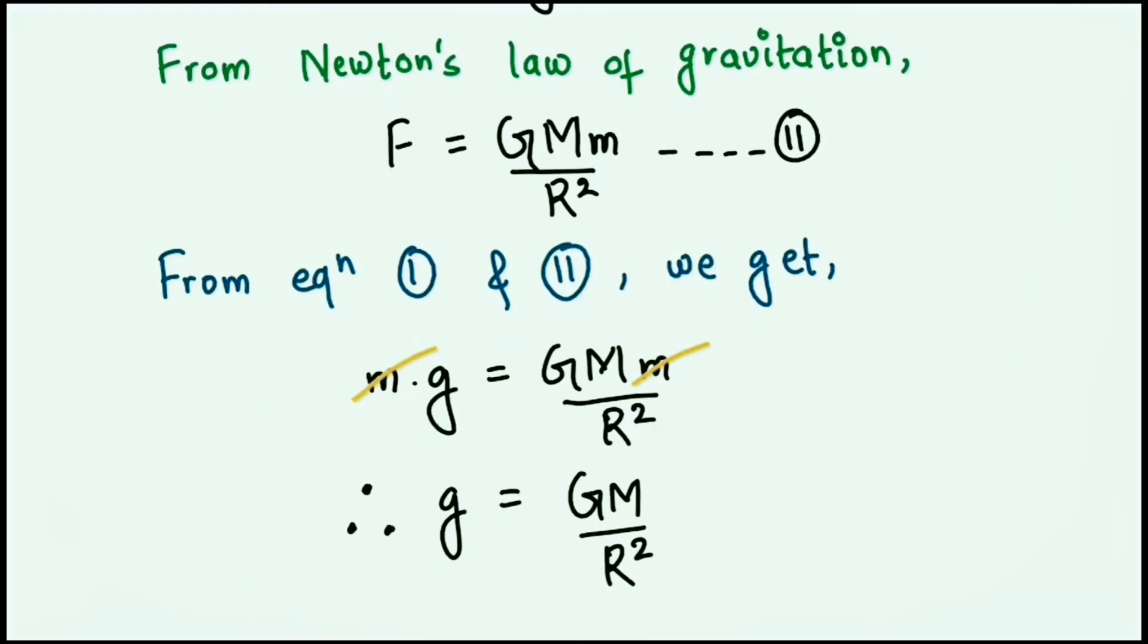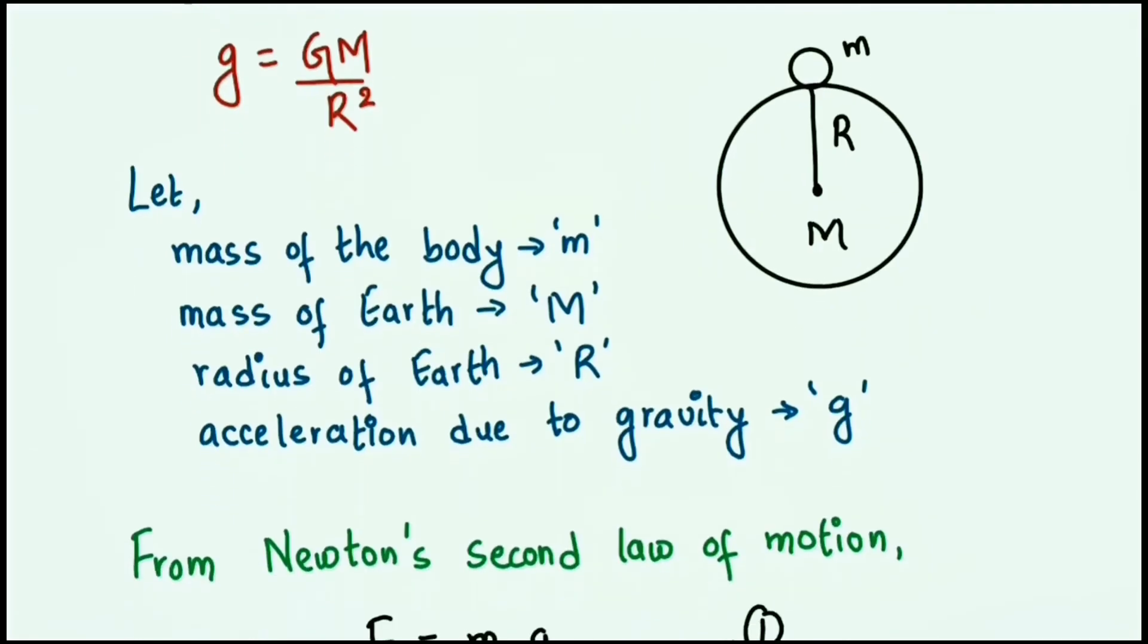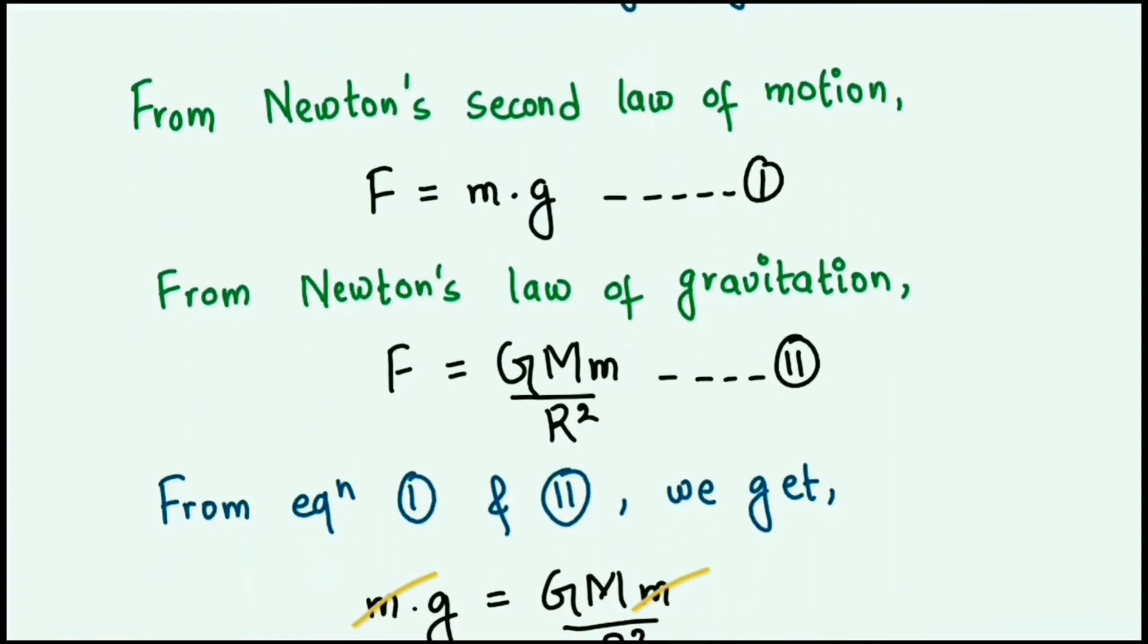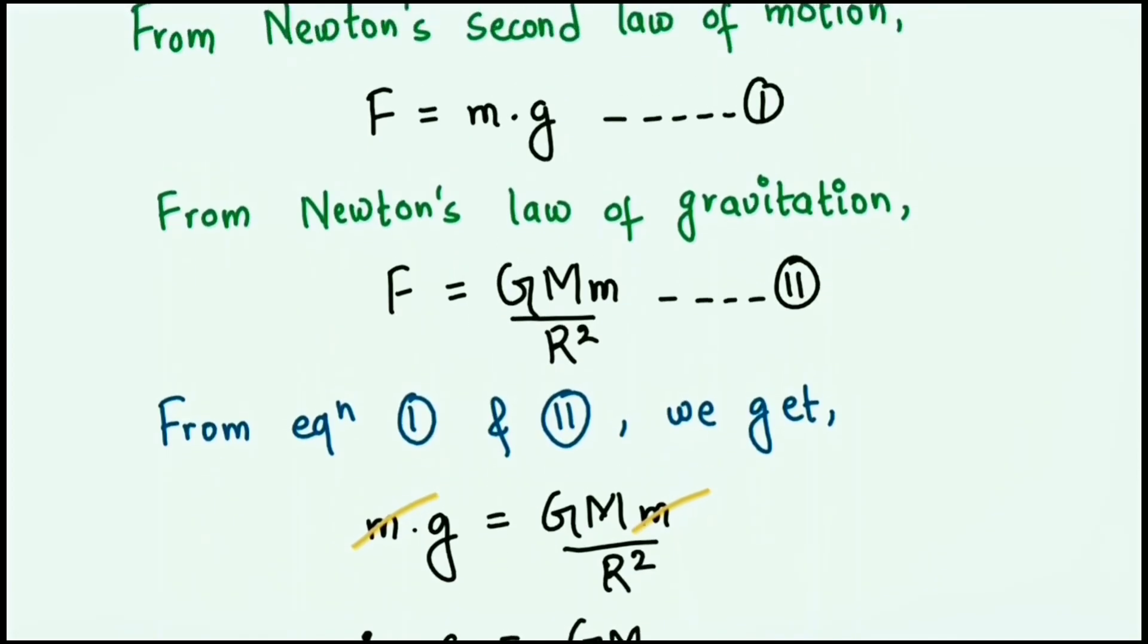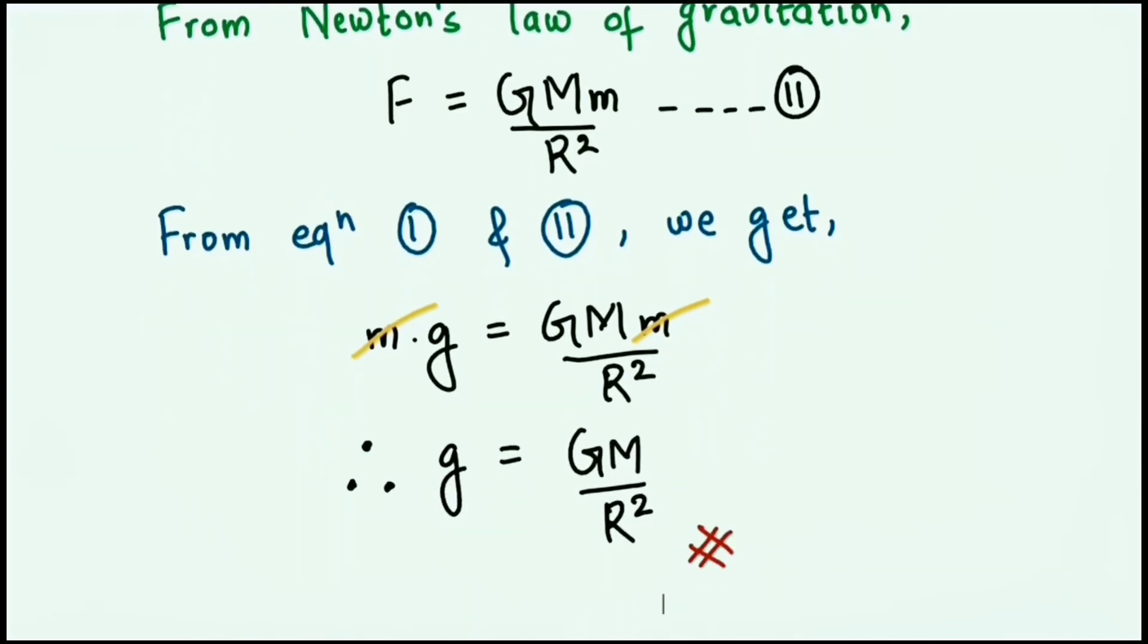And that's it. That's how you derive the formula of acceleration due to gravity. So first of all, what we did is we assumed certain things. Then we used two laws of Newton: Newton's second law of motion and Newton's law of gravitation. After that, we equated these two equations of force, eliminated the small masses, and then we got our formula.